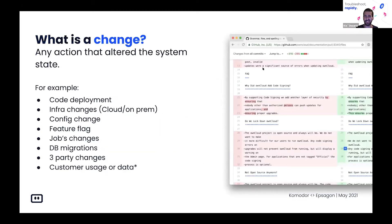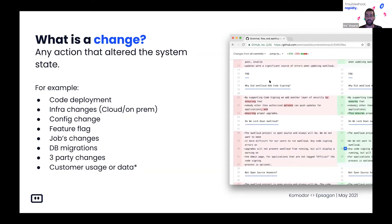So when I say changes, what do I really mean? This talk is specifically going to be around system-wide changes. I mean things like code deployment, which is the first thing that comes to mind, but also infra changes — like changing a security group on AWS — configuration changes, feature flags with tools like LaunchDarkly and Split.io, job changes in Jenkins or GoCD or any other job platform.